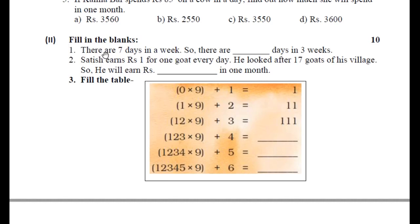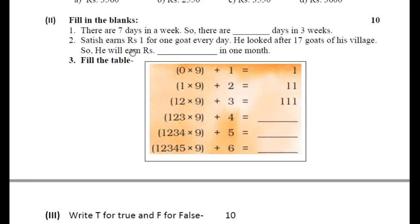Next: Phillip says there are 7 days in a week, so there are how many days in 3 weeks? Three weeks में days निकालने के लिए 7 और 3 का multiply कर दीजिए. Satish earns 1 rupee per goat every day. वो village में 17 goats देखता है, तो one day में 17 rupees कमाता है. One month में कितना कमाता है? 17 और 30 का multiply कर दीजिए.